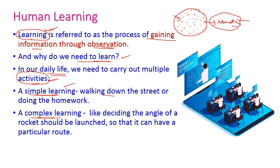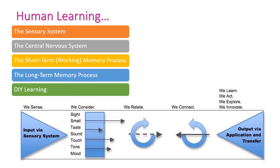Simple learning includes walking down a street, doing homework, or chatting with friends. More complex learning requires very careful observation of the environment — like deciding the angle at which a rocket should be launched so it follows a particular route. So learning is either simple or complicated.